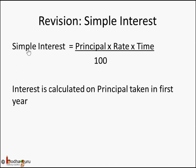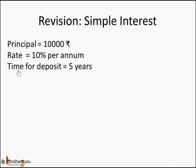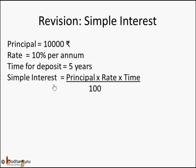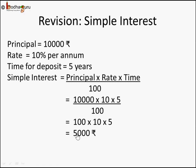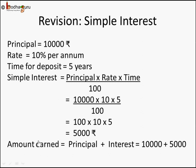To revise: simple interest is equal to principal into rate into time divided by 100. Interest is calculated on the principal. For example, say you are making a deposit of 10,000 rupees at 10% per annum for 5 years. Simple interest = PRT/100 = 10,000 × 10 × 5 / 100, which is 5,000 rupees. The total amount returned will be 10,000 + 5,000 = 15,000 rupees.